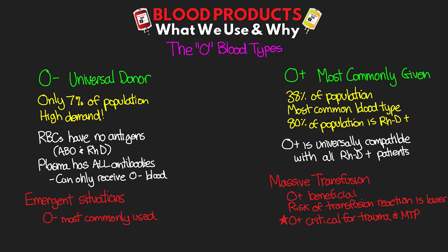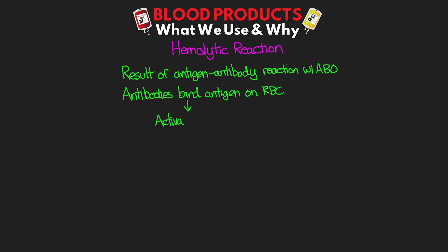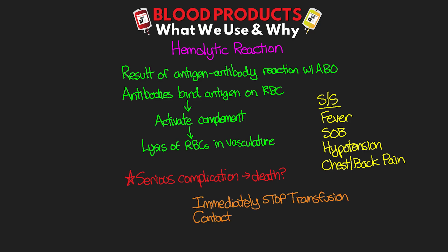The next thing I want to talk about is some of our transfusion complications. Given the issues with compatibilities and general immune reactions, there are certain complications that can arise from giving blood and other blood products. The first of these is going to be our hemolytic reactions. This is a result of that antigen-antibody reaction with ABO-incompatible blood types. The antibodies bind the antigen on the red blood cells and then activate the complement system, leading to lysis of these blood cells within the vasculature. Signs and symptoms you would see are fever, shortness of breath, hypotension, and chest and back pain. This is a very serious complication that could potentially lead to death. So if this is happening, you need to immediately stop the transfusion and contact the provider. Treatment is supportive, really trying to support their hemodynamics.